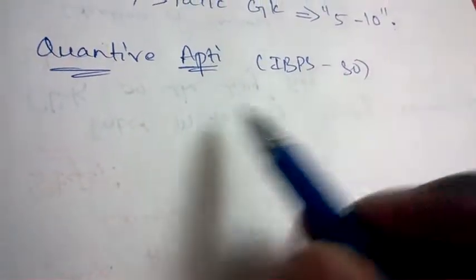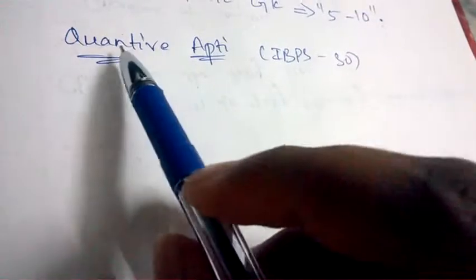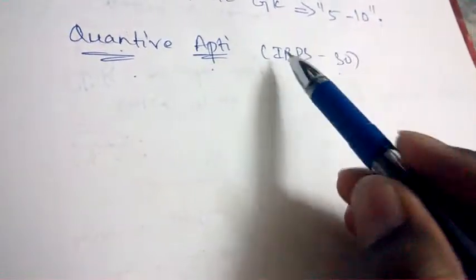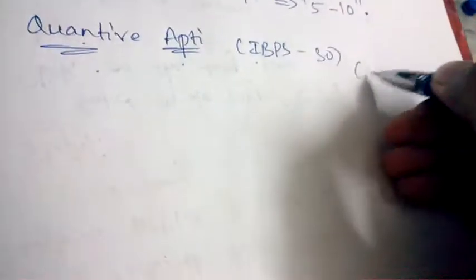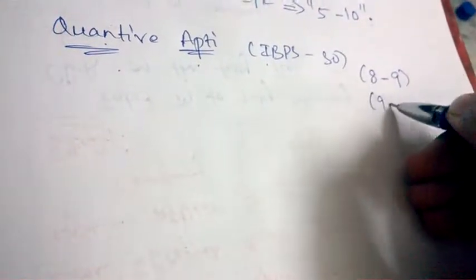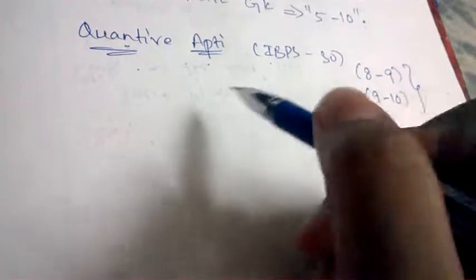Friends, welcome to Best Way to Study. In this video, we are going to discuss important topics from Quantitative Aptitude in IBPS SO Prelims question paper. The cutoff for Quantitative Aptitude will be 8 to 9 marks or 9 to 10 marks.